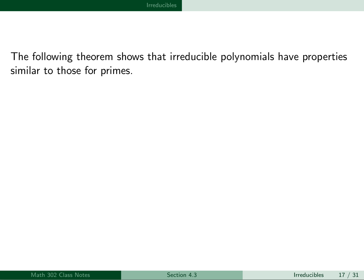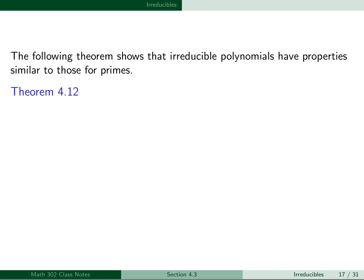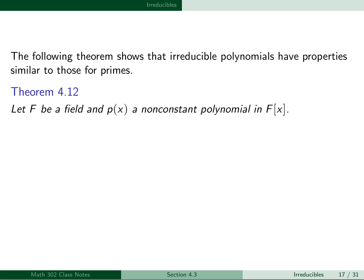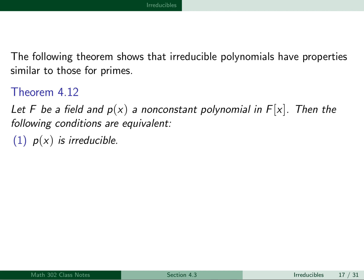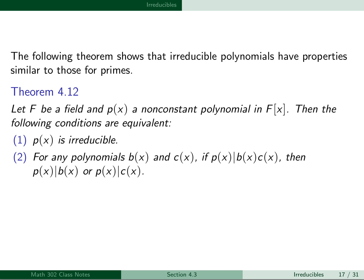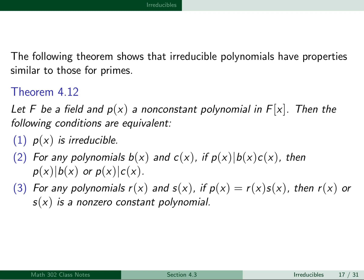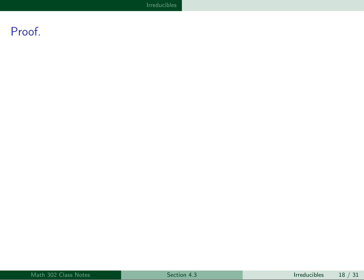The following theorem shows that irreducible polynomials have properties similar to those for primes. Let F be a field and p(x) a non-constant polynomial in F[x]. Then the following conditions are equivalent: (1) p(x) is irreducible; (2) for any polynomials b(x) and c(x), if p(x) divides the product b(x)·c(x), then p(x) divides b(x) or p(x) divides c(x); (3) for any polynomials r(x) and s(x), if p(x) equals r(x)·s(x), then r(x) or s(x) is a non-zero constant polynomial. We'll show 1 implies 2, 2 implies 3, and 3 implies 1.